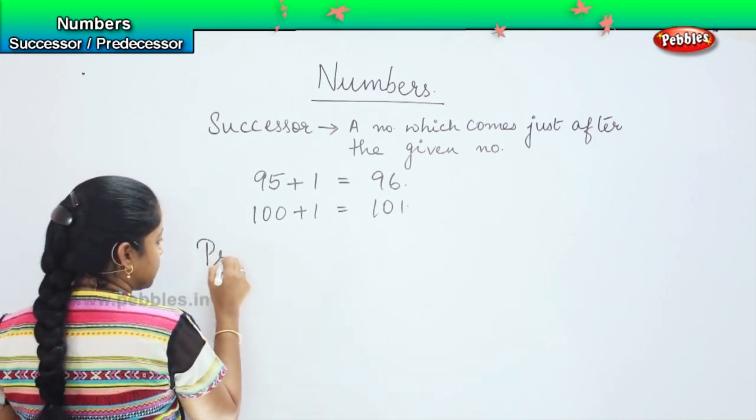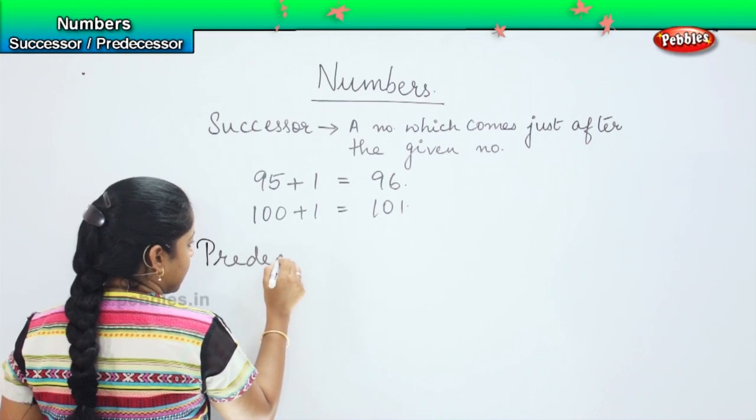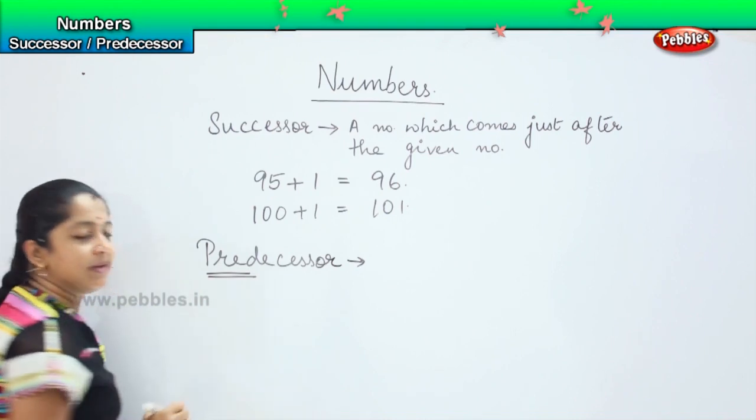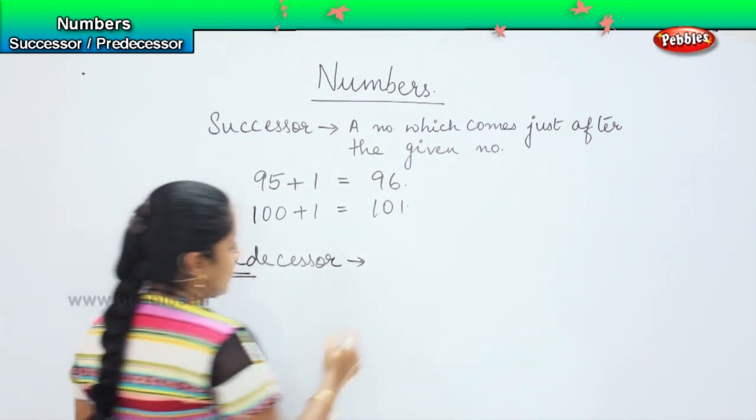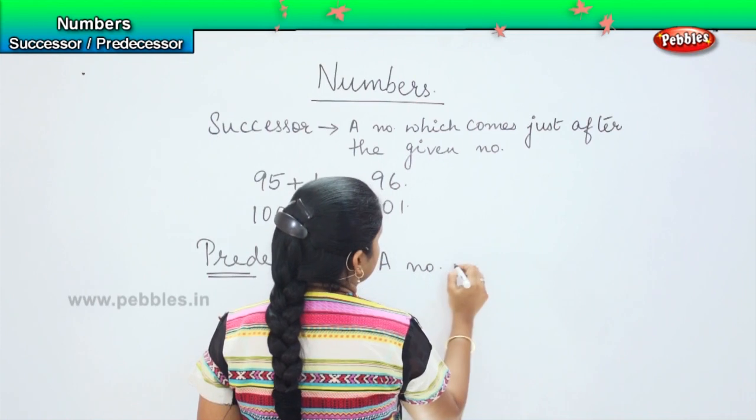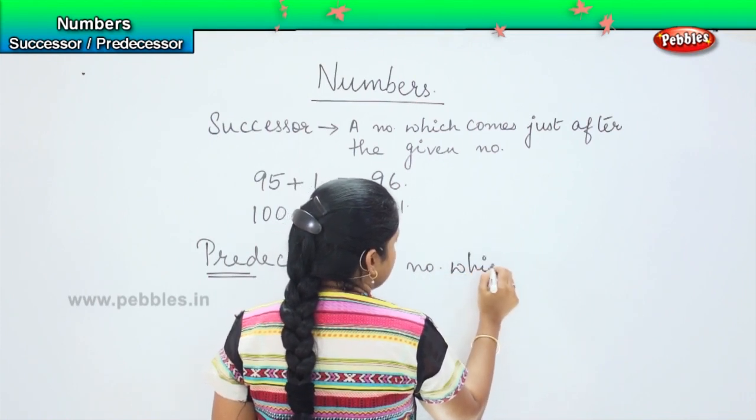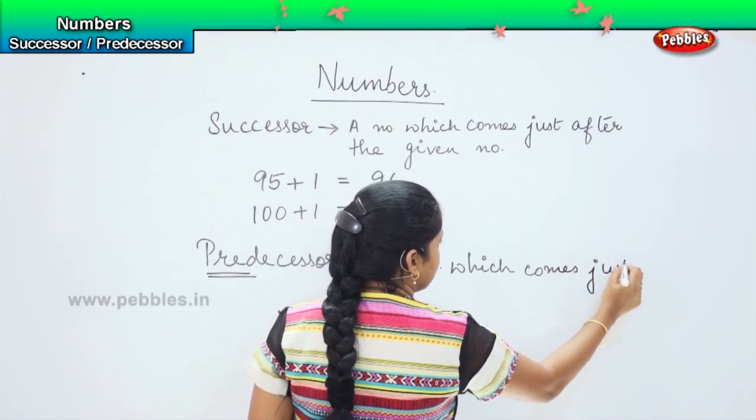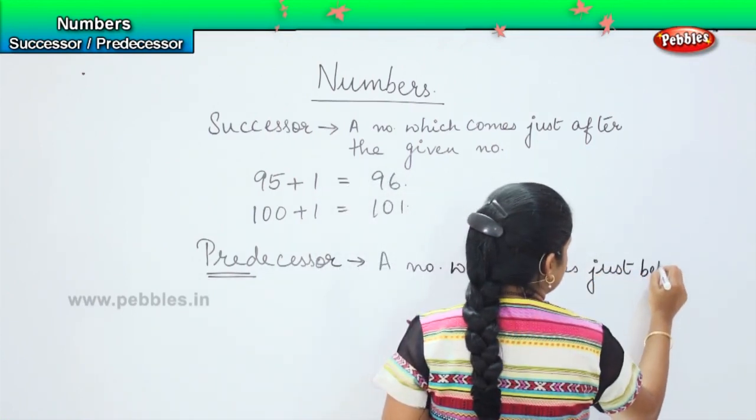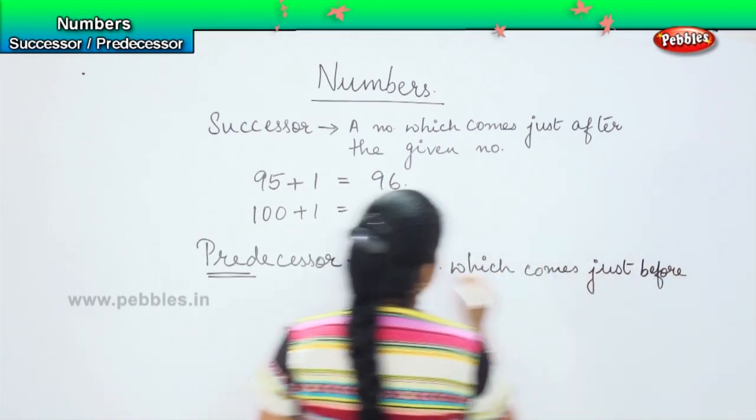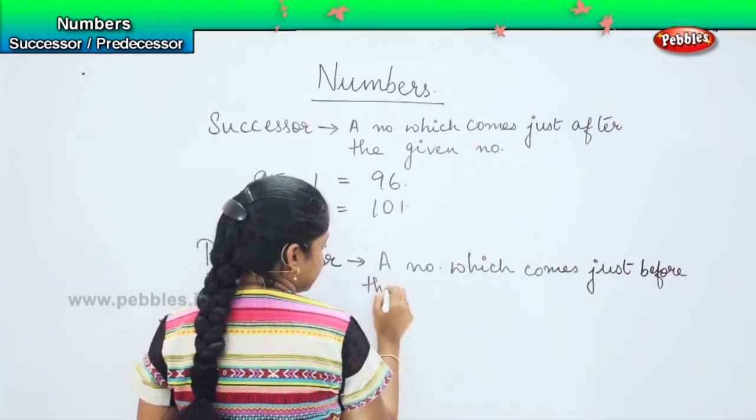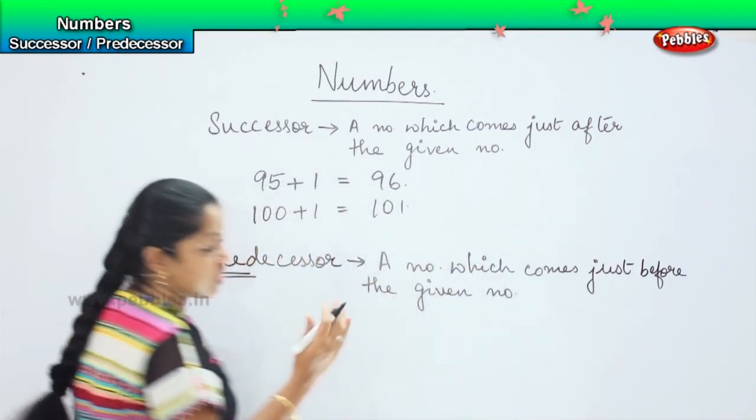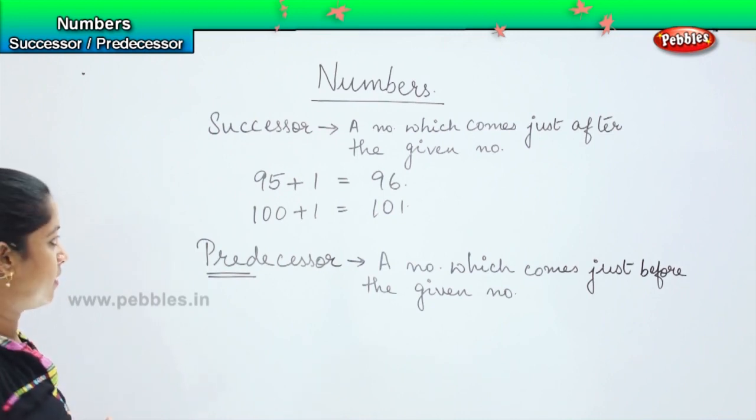Coming to the next one, it is predecessor. The name 'pre' means what? Before. So it means a number which comes just before the given number, just before, which means immediately before the given number.